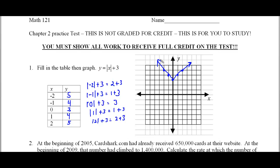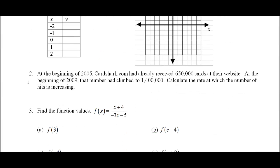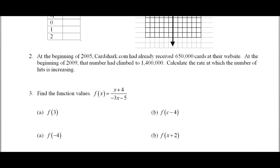Let's go take a look at the next problem here. Problem number two. It says at the beginning of 2005, CardShark.com had already received six hundred and fifty thousand cards at their website. At the beginning of 2009, that number had climbed to one point four million or one million four hundred thousand. Calculate the rate at which the number of hits. Now that's a typo there. Sorry.